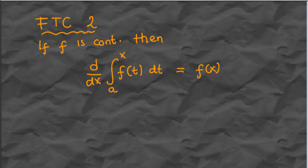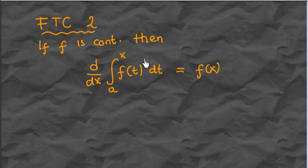In this video we will discuss the second fundamental theorem of calculus, which roughly says that if we have a continuous function f, and we define a function as an integral from a to x, then we can talk about the derivative of that function. The theorem says that the derivative of that function defined by the integral is exactly the same function with the x variable.